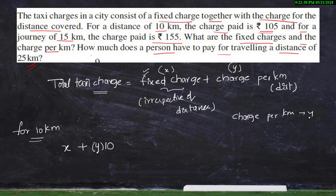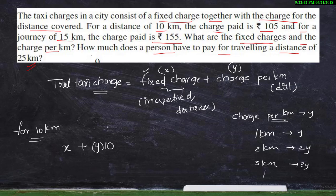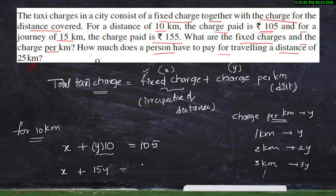The charge per kilometer is y — for 1 kilometer you pay y rupees, for 2 kilometers you pay 2y rupees, for 3 kilometers you pay 3y, and like that for 10 kilometers you pay 10y. So total charge is x plus 10y equals ₹105. Similarly, for a journey of 15 kilometers: fixed charge plus 15y equals ₹155.